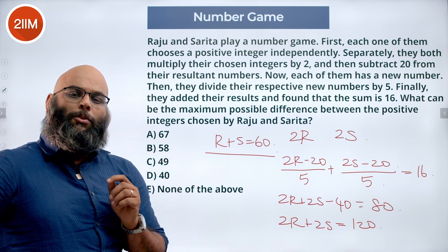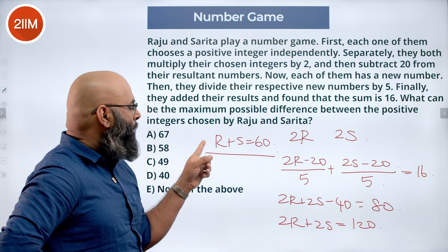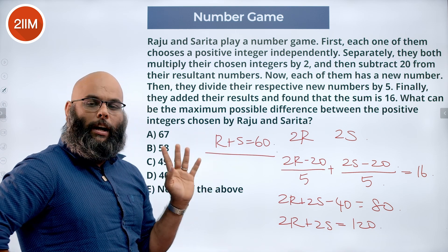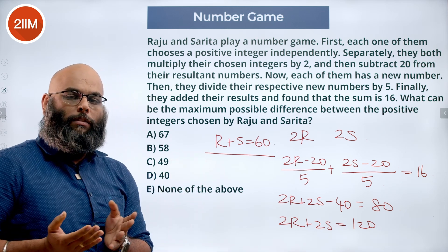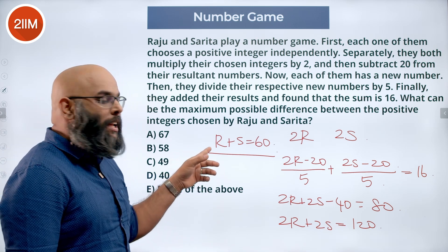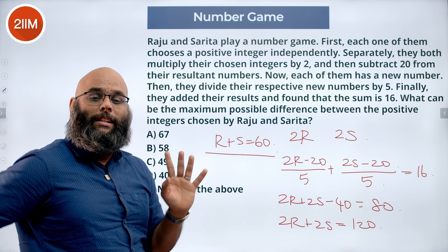Now let's see, both of them have chosen positive integers. So this is a number greater than 0, this is a number greater than 0. So bare minimum one of them has to choose 1. Now to have the maximum difference, one should have the least value and the other one has the highest value.